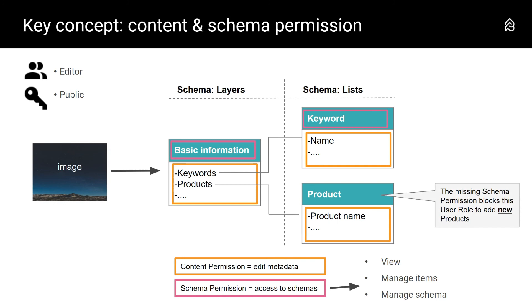That is really a key concept to understand well. Access permission is defined by what the user role can do on the content and what can be done on the schema — in most cases your layers and lists. This might look a bit complicated at first glance, but it actually gives you as administrator fantastic flexibility to manage permissions adapted to a great number of use cases. We are very happy to discuss your specific needs and how they can be implemented, as there are often many different ways a use case can be solved.